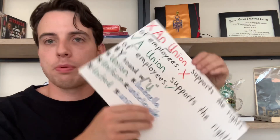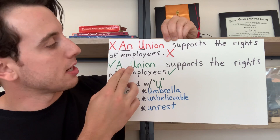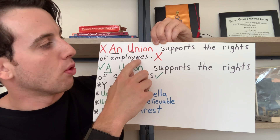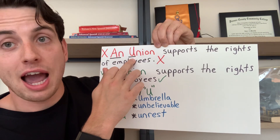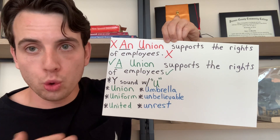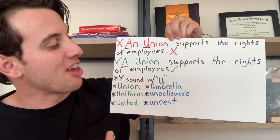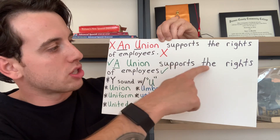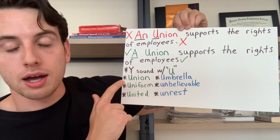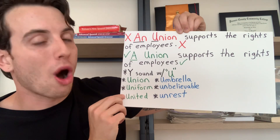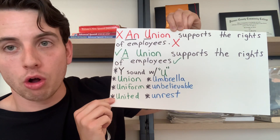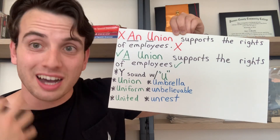A few examples with U. The wrong way to say this sentence would be 'An union supports the rights of employees.' Although U is a vowel, it has the sound of a consonant — Y — as in 'U-nited.' It has the sound of a Y. Therefore, we would say 'a union supports the rights of employees.' Words like union, uniform, and united would all be considered consonants because of how the word is pronounced.